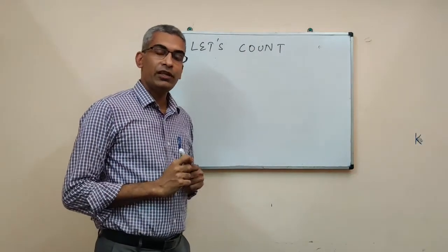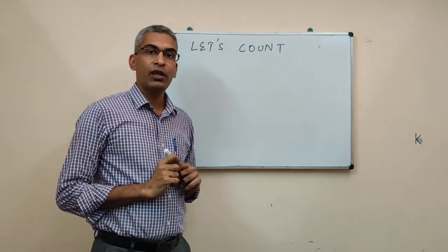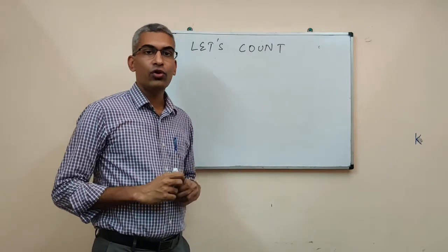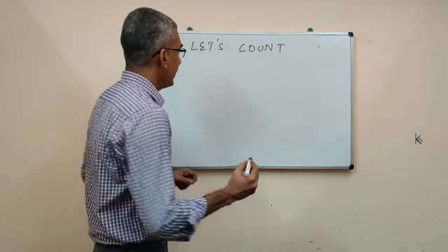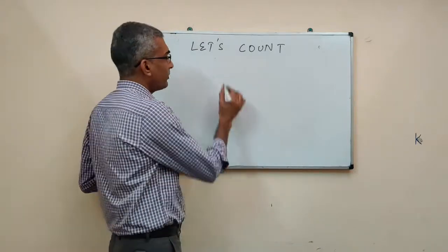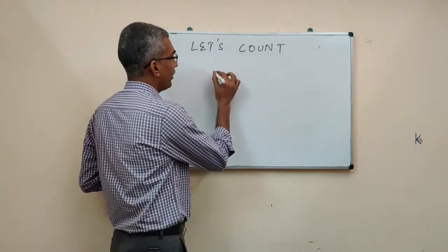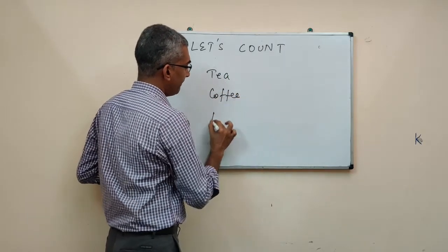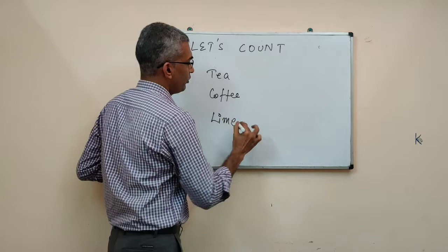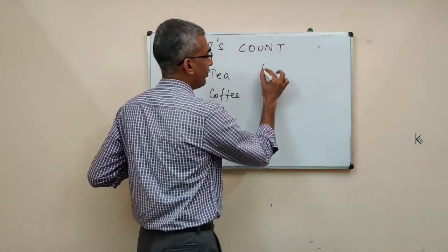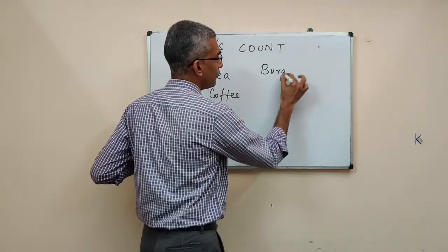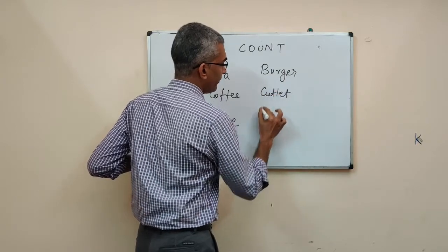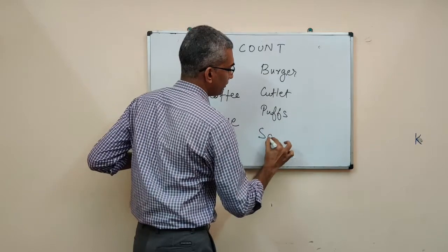Let us say, in the evening, you felt really hungry and you wanted to have a drink and a snack. You go to the nearby cafeteria. In the cafeteria, the options available for drinks are tea, coffee and lime. For snacks, let us say, you have burger, cutlet, puffs and samosa.